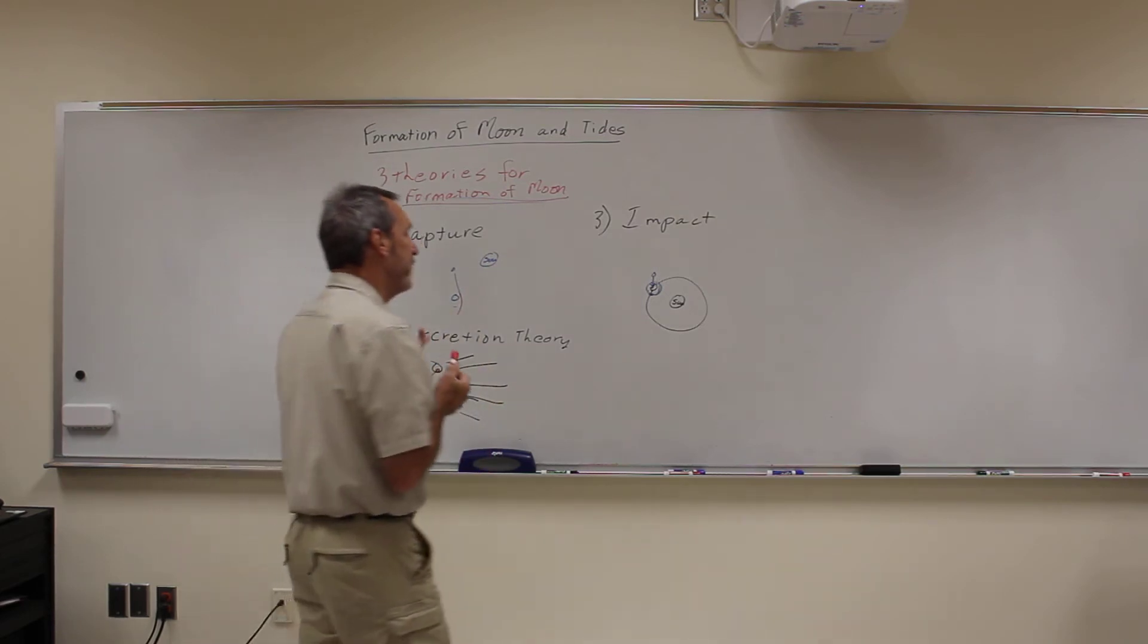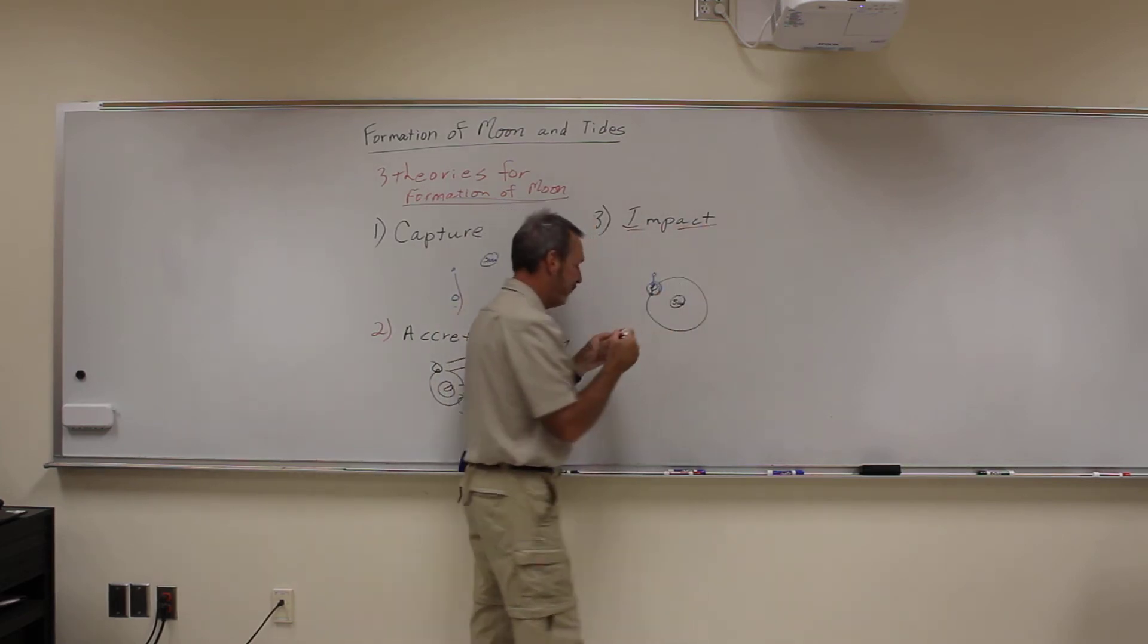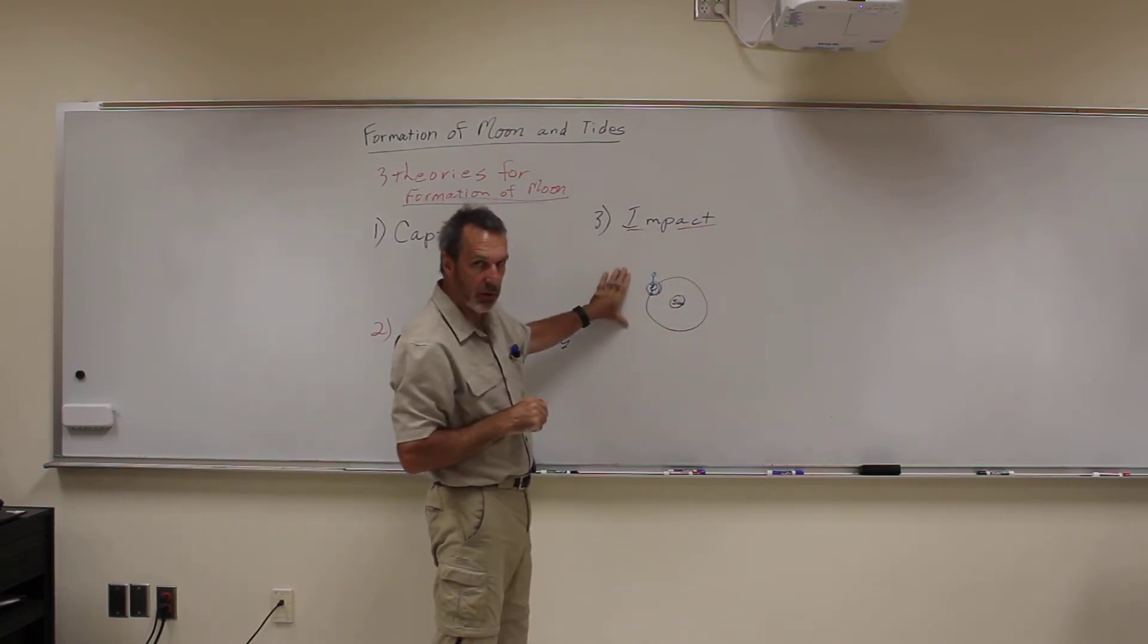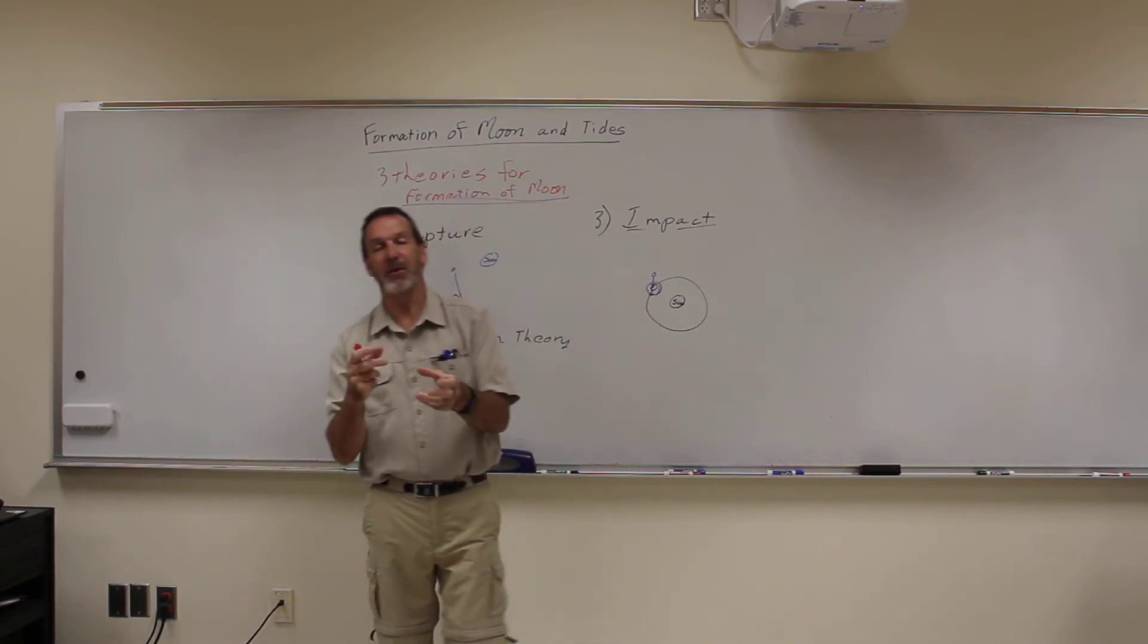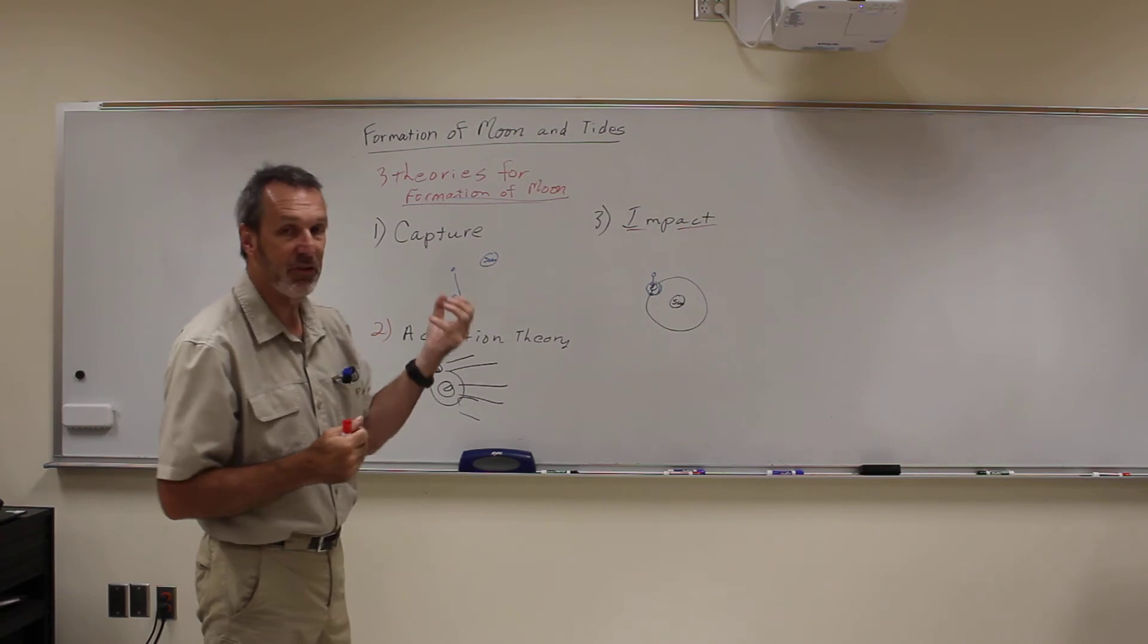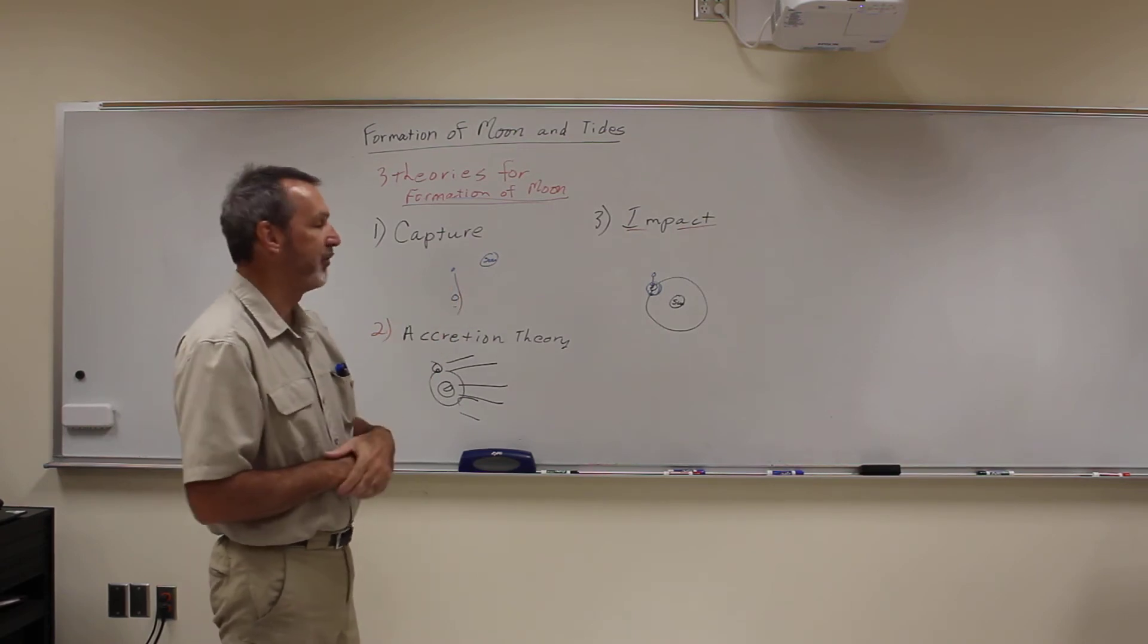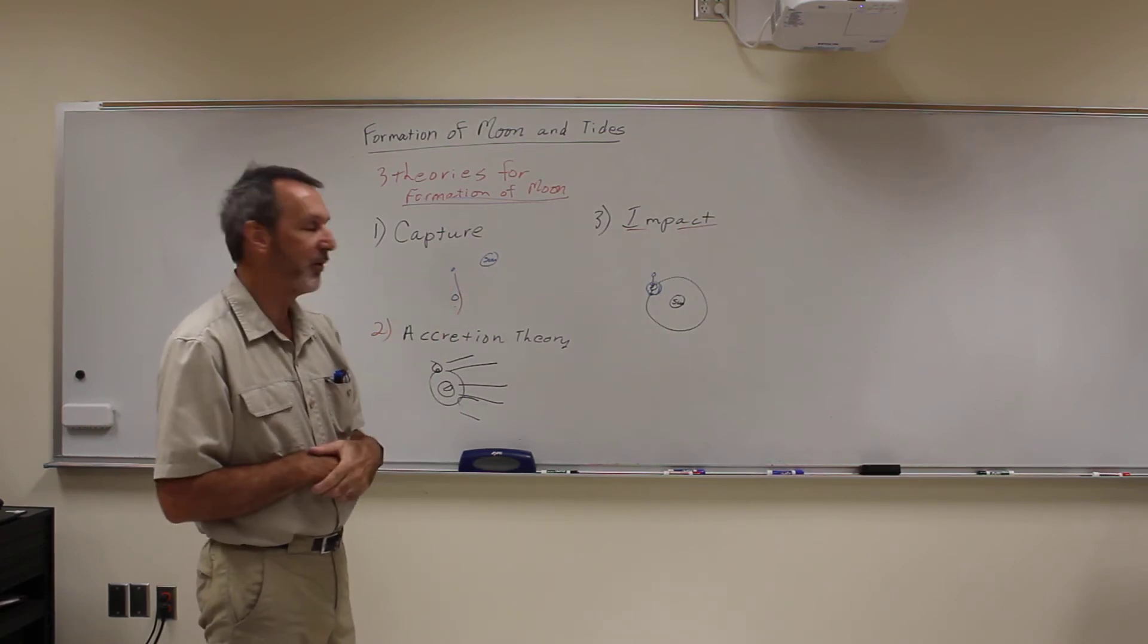Now the reason we believe this one is more likely than the other one is we can actually make this occur using computer simulations. If you have a large enough body hitting the earth at the right angle at the right time, then you can actually create a body that's about 1% the mass of the earth in an orbit about earth's size.